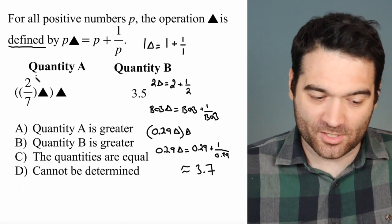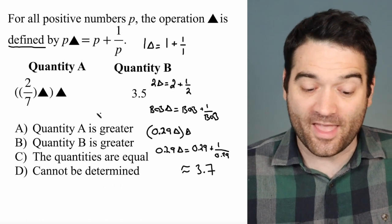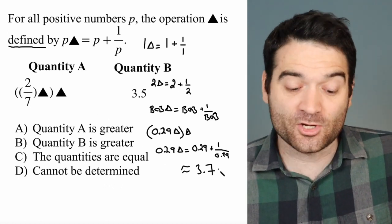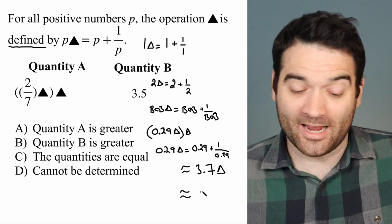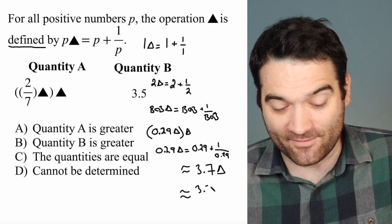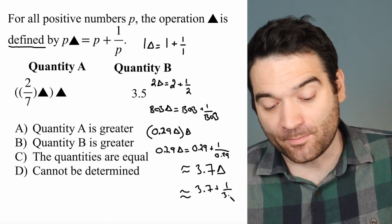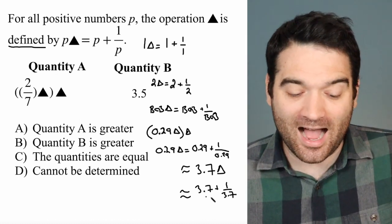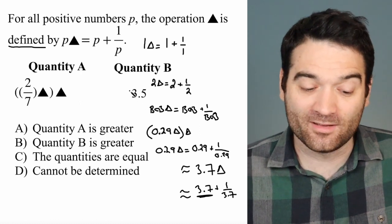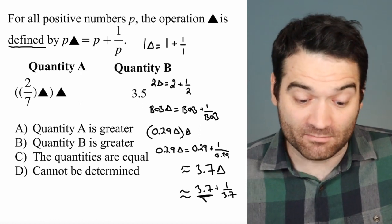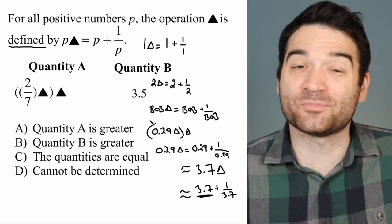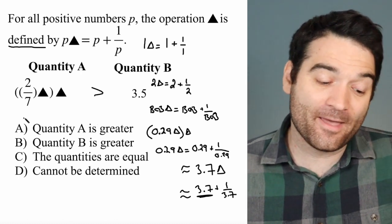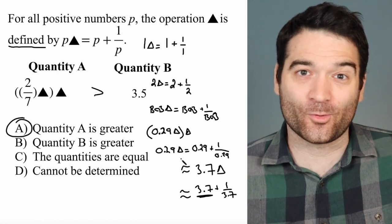And so what this function is telling us to do is we do this one first, and then we do the triangle again. So we're going to do 3.7 triangle. And I could write this out. I could calculate this out, 3.7 plus 1 over 3.7. But here's the thing. I've already gone over 3.5, right? 3.7 is bigger than 3.5, and I'm adding a little something. I'm still going to be greater than 3.5. And that means that quantity A is the correct answer here.